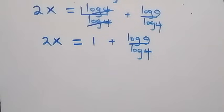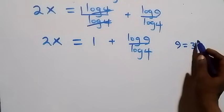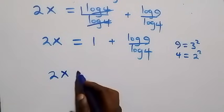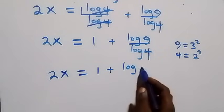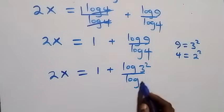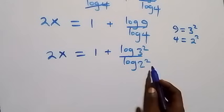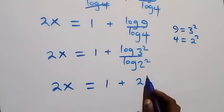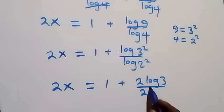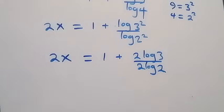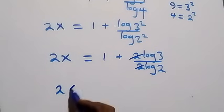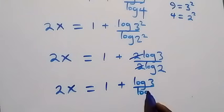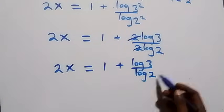Now we express 9 as 3 squared and 4 as 2 squared, so 2x equals 1 plus log(3 squared) over log(2 squared). Applying the power rule of logarithms, the 2s come down and we get 2x equals 1 plus 2·log 3 over 2·log 2. The 2s cancel, leaving 2x equals 1 plus log 3 over log 2.